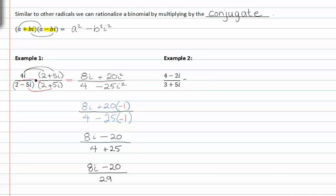In example two again we have to multiply by the conjugate to get rid of that square root of negative one issue. We're rationalizing the denominator by multiplying by the conjugate. The conjugate would be three minus five i. Whatever we multiply in the denominator we must also multiply in the numerator.